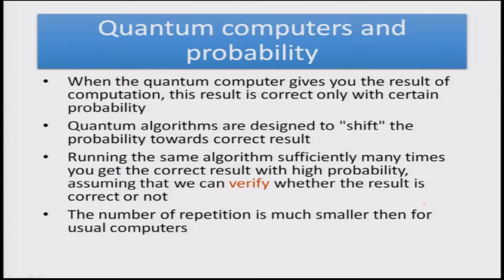Quantum computing is probabilistic and that has its advantages. When the quantum computer gives the result of computation, this result is correct only with a certain probability. Quantum algorithms are designed to shift the probability towards correct results. By running the same algorithm sufficiently many times, the correct result can be obtained with very high probability, assuming we can verify whether the result is correct or not. The number of repetitions necessary is much smaller compared to usual computers.